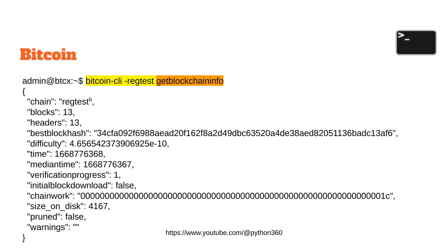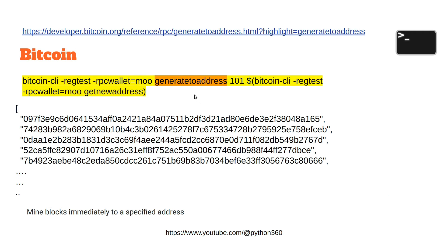GetBlockchainInfo shows: chain regtest — so if you're not sure what chain you're on, it will confirm. It also shows blocks (13), hash, and difficulty, along with all the things we just mentioned. If you download the PDF from the description, you can copy and paste these commands and also visit the hyperlinks.